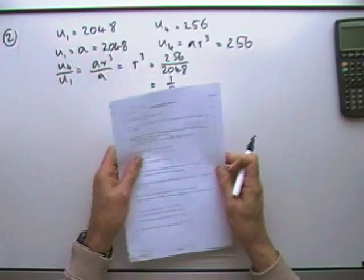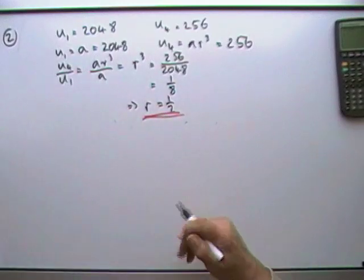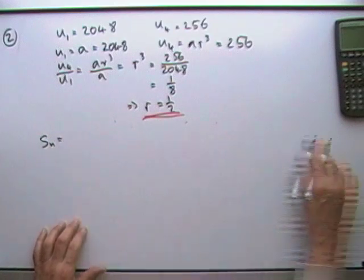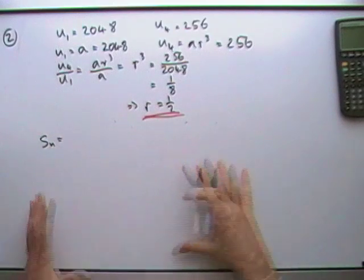Now the second part said, given the sum of the first N terms is 4088. I need a formula for this. I've not left myself much room, I may have to work my way across. Not really good form, but not much space.